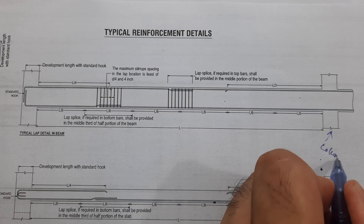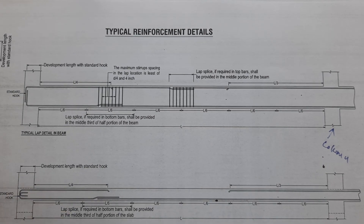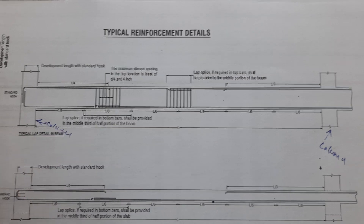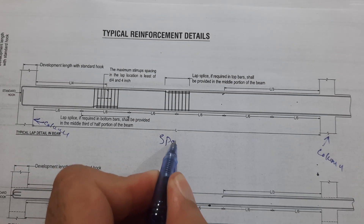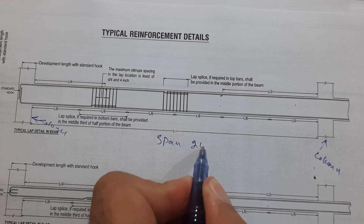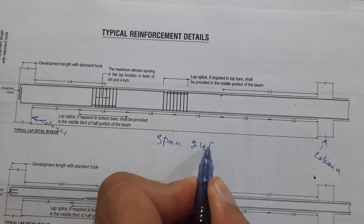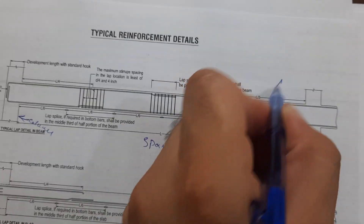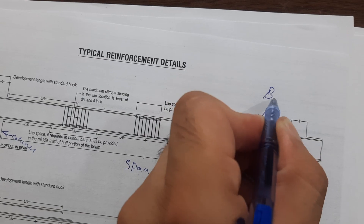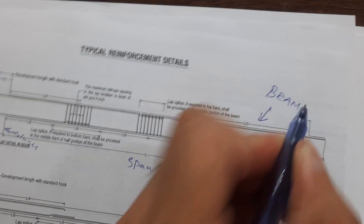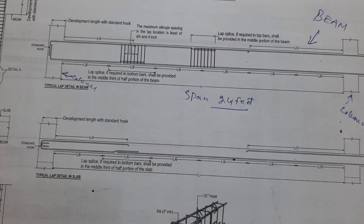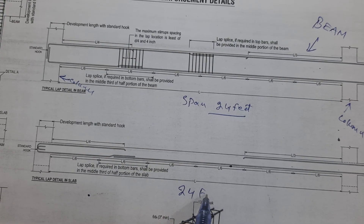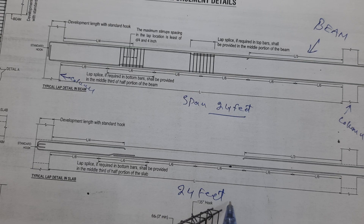As you can see, here we have an RCC column and another column. The span between the two columns is up to 24 feet. This is the beam, and the slab span is also 24 feet. I am just guiding you through its details.